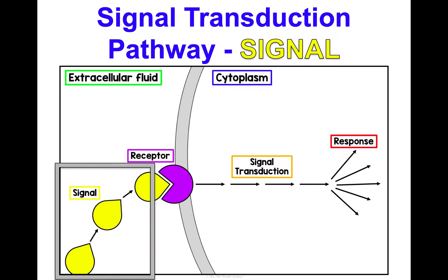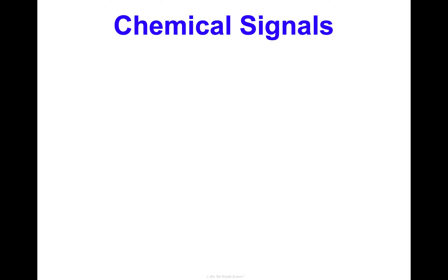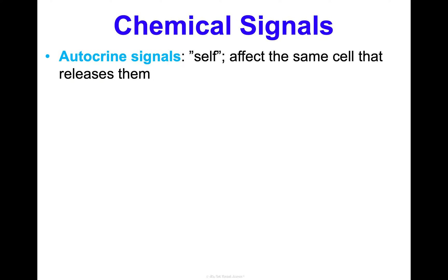First, let's talk about the signal part of the signal transduction pathway. I'm going to talk just about chemical signals, but remember there are environmental ones too. One type of chemical signal is an autocrine signal. The prefix auto means self, so this is a self signal — where you're sending a signal from the same cell that is going to release them.